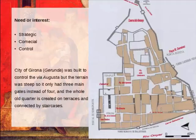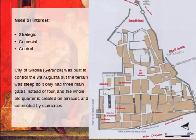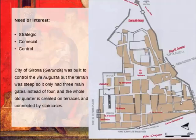In Girona, you still have the two main streets, but the rest of the city had only three main gates and the whole quarter had to be created on terraces, connected by staircases. As you can see, multiple staircases connected the different levels of the town. So while there is a basic ideal type of town layout, the Romans did adapt to the terrain.